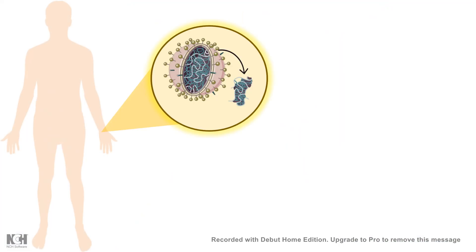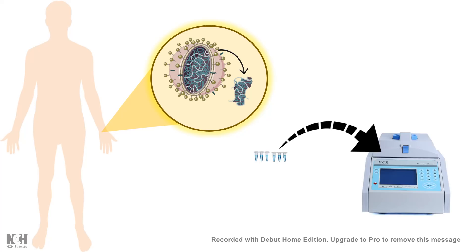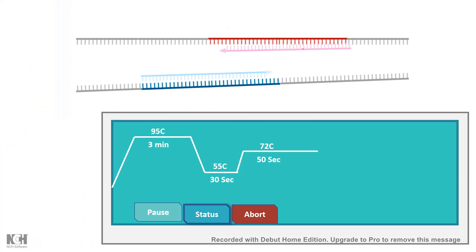The viral genome is now sequenced, so scientists can identify the unique genes present in these viruses. Those genes can be detected by PCR, which is one of the diagnostic methods currently used to detect coronaviruses.